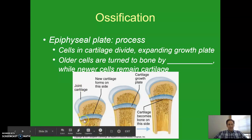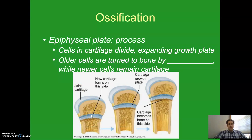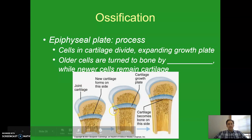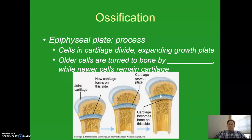Cells in the cartilage divide, and that expands the growth plate. Then the older cells are turned to bone by the osteoblasts, while newer cells remain cartilage. In this way, the bone is able to grow and expand and get longer.